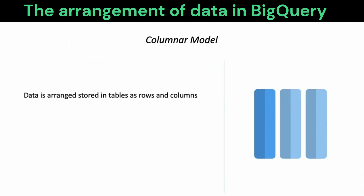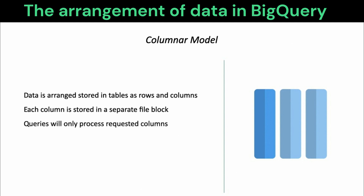Now let's zoom in a little bit on individual tables and see how data is represented. BigQuery adopts the columnar data model. So while each table is arranged as rows and columns, it is each column which is separately stored in a file block. Unlike relational databases where rows or records are stored together, BigQuery stores data in tables as columns. If a query requests specific columns in your table, it is just the corresponding file blocks which will be retrieved and processed.